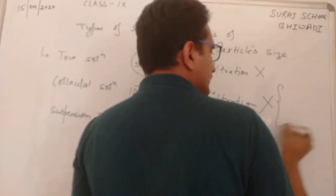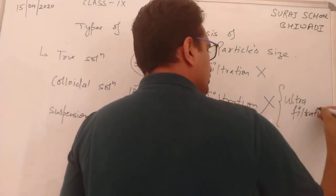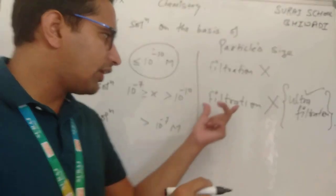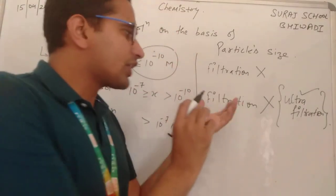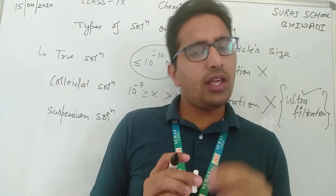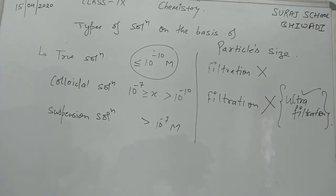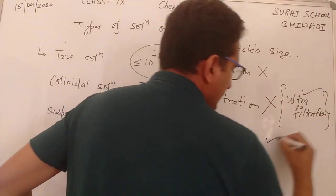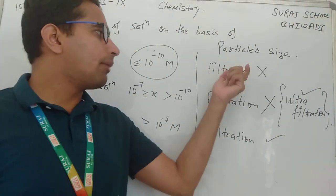Additional knowledge के लिए: colloidal solution को ultra filter paper से filtrate किया जा सकता है — इसे ultra filtration कहते हैं। Suspension solution के particles बड़े होते हैं, इसलिए suspension solution को normal filter paper से filtrate किया जा सकता है। Filtration के basis पर भी इन तीनों को classify किया जा सकता है।